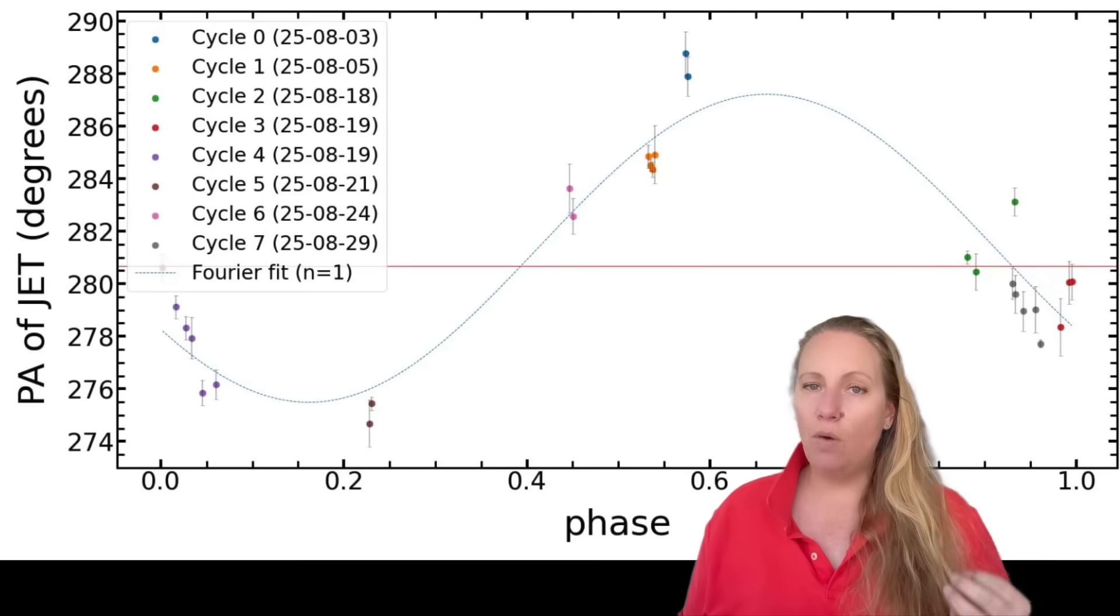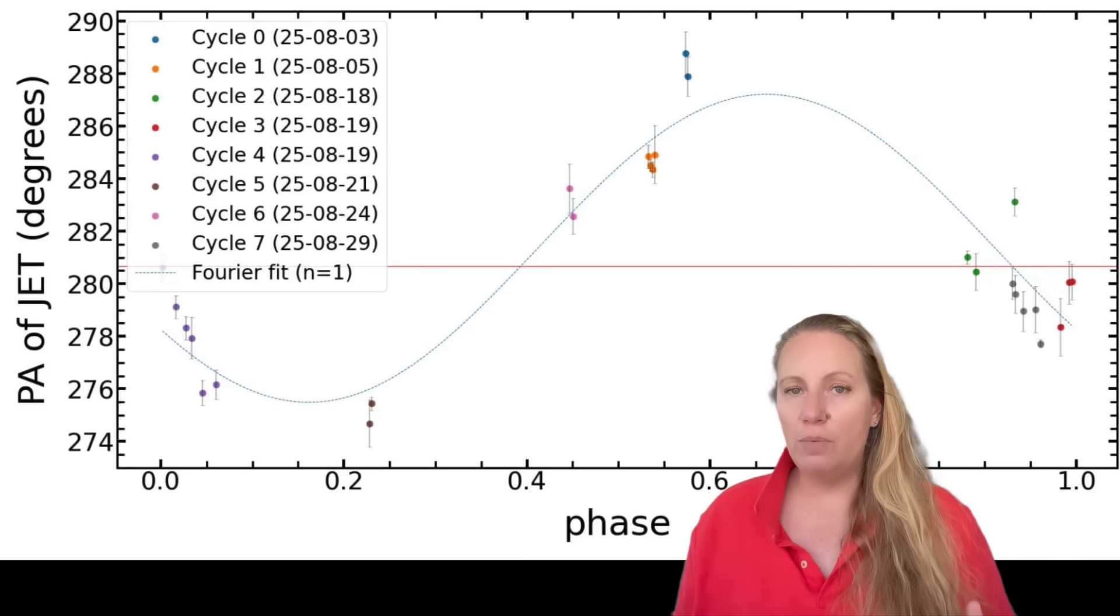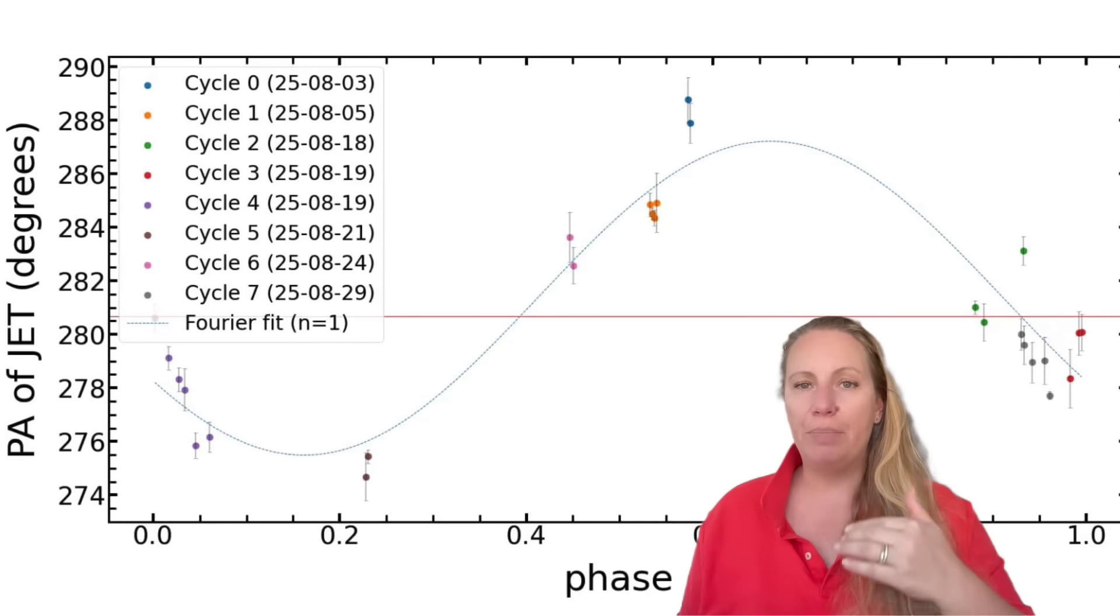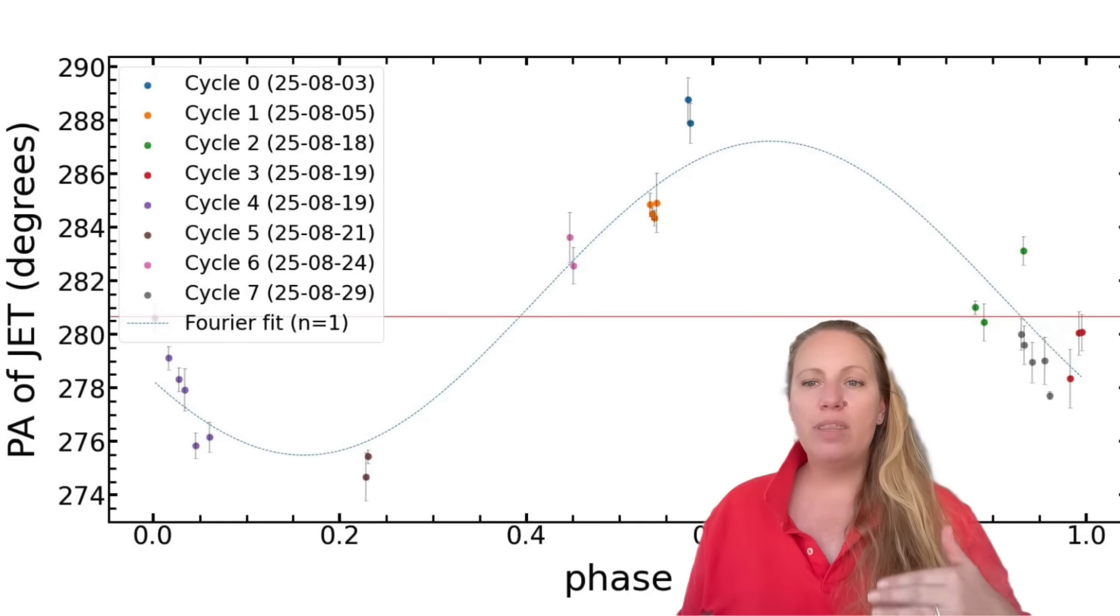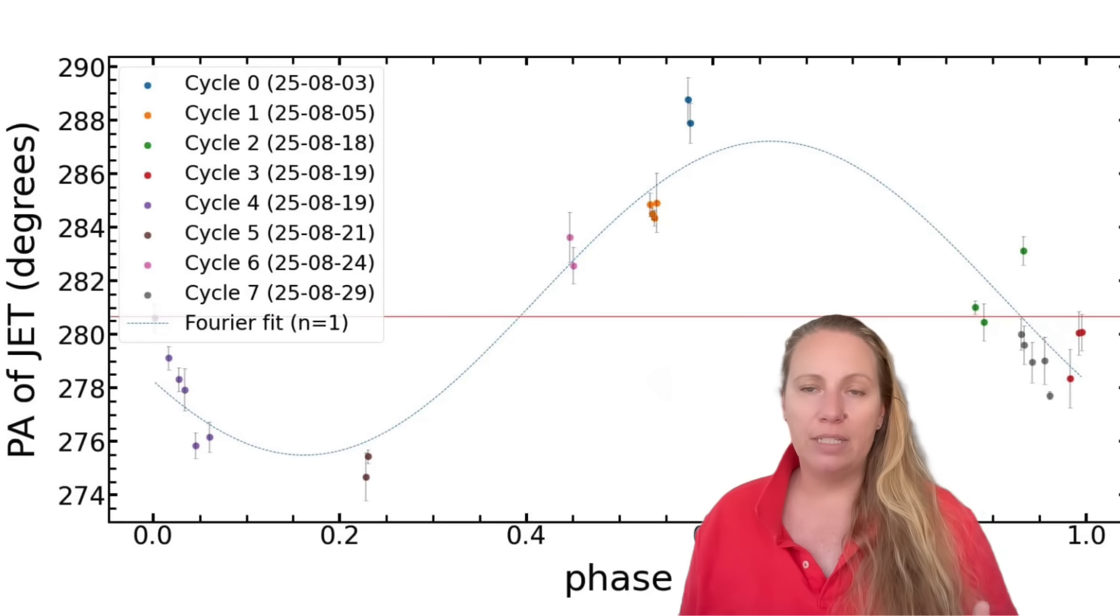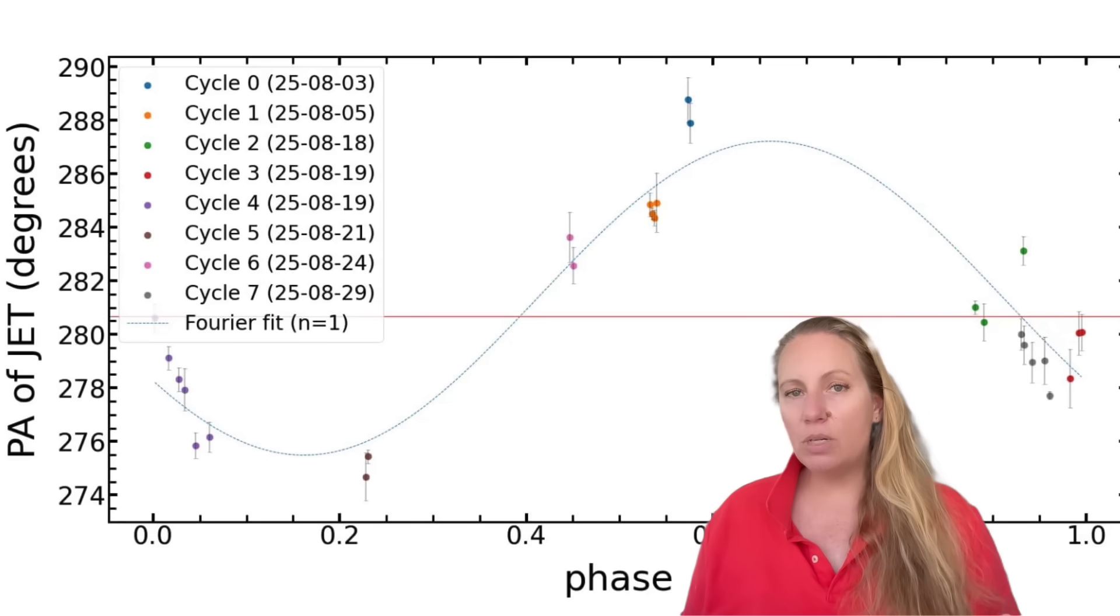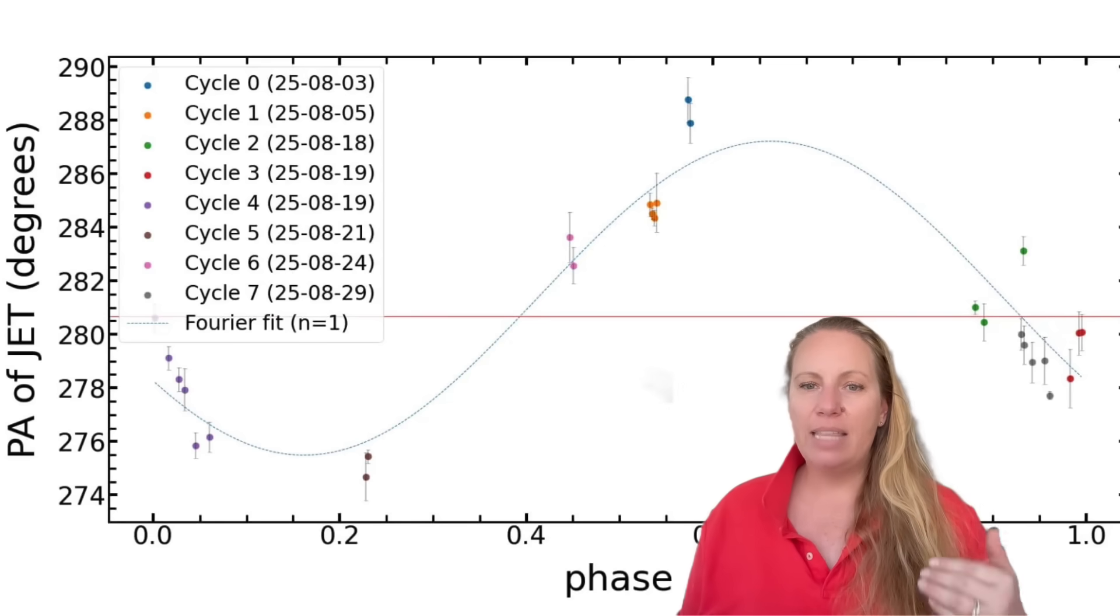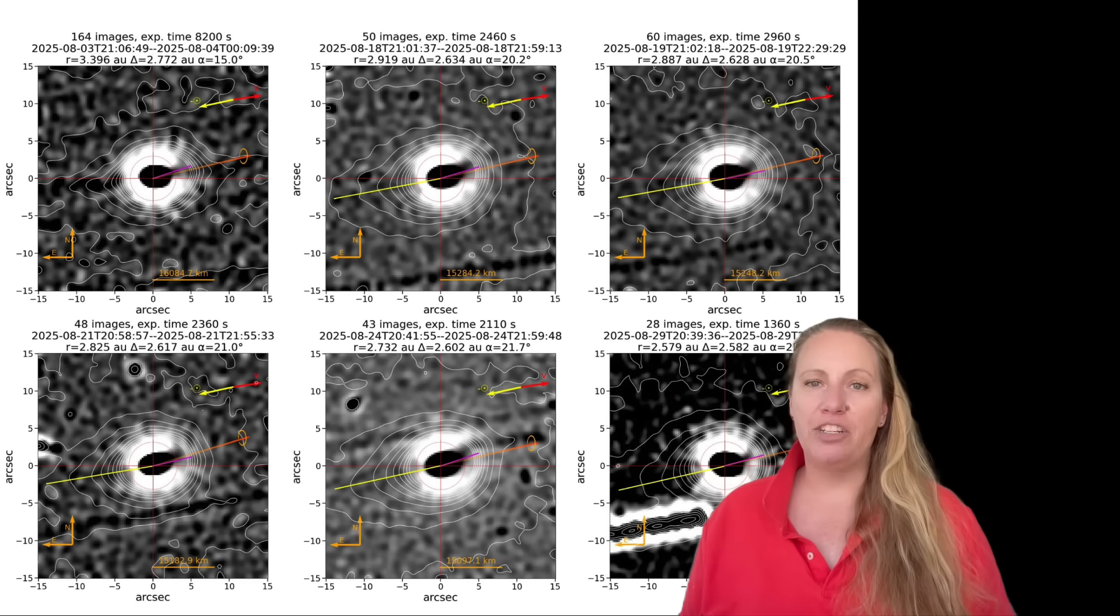Then they phased the measurements. That means they folded the data into a repeating cycle, like turning many days of observations into one repeating clock. They found this repeating wobble with a period of 7.74 hours. That means every 7.74 hours, this thing rotates a full rotation around its own axis. The red horizontal line in the image is the average direction of the jet angles, and that average direction gives you the sky projected orientation of the rotation axis.